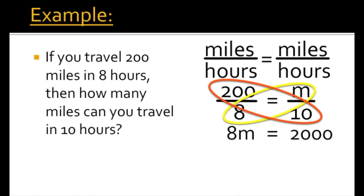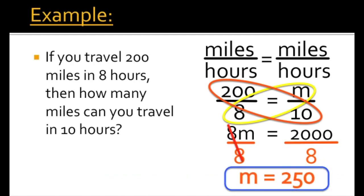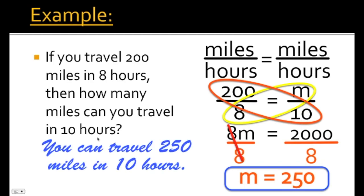The second step is to get the variable by itself. We divide both sides by 8. The 8s cancel, leaving m alone. m equals 2,000 divided by 8, which gives us 250. Just like with the last example, we plug the answer back into the word problem. How many miles can you travel in 10 hours? You can travel 250 miles in 10 hours.